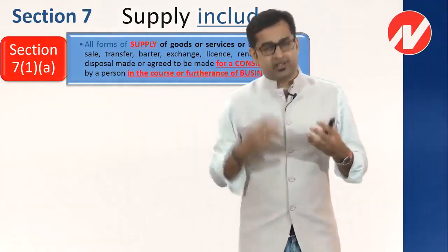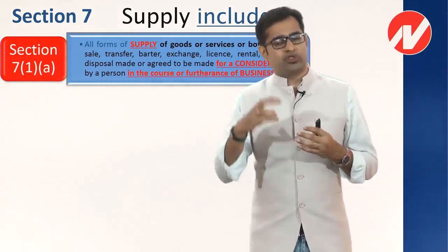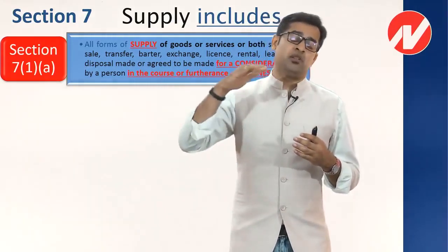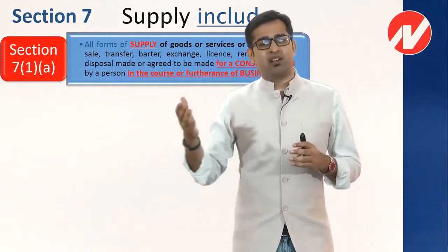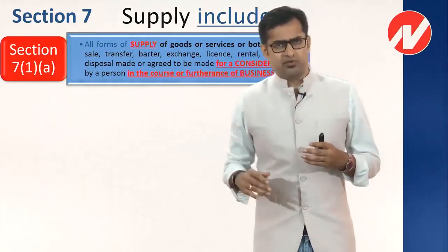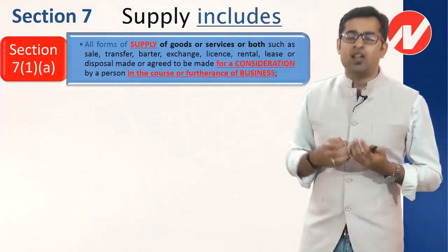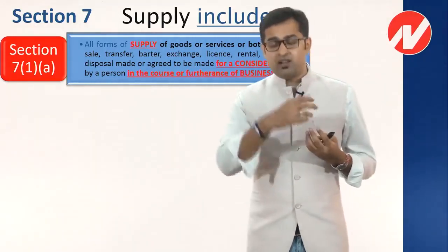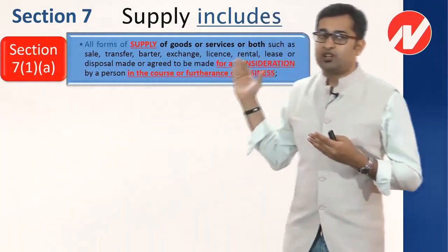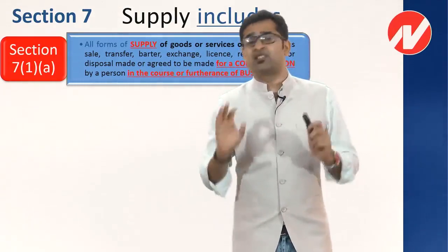Then we have rental and lease, which are almost the same but differ by duration. Lease is a long-term arrangement — it can go up to 99 years. Rental is for a shorter period — maximum 11 months and 29 days. In any form of disposal — sale, transfer, barter, exchange, license, lease, rental, or any other manner — we will consider that as supply. Supply is a very broad definition.